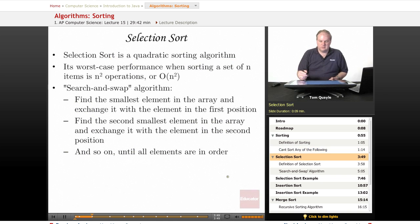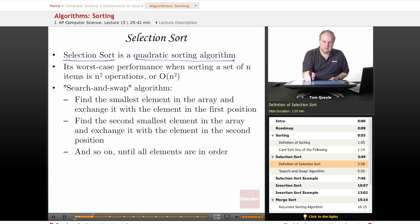The first sorting method that we'll talk about, and this is one of the three that is covered on the AP exam, is called selection sort. Selection sort is known as a quadratic sorting algorithm.